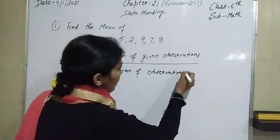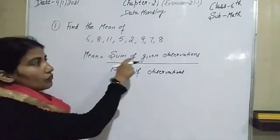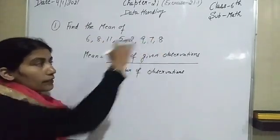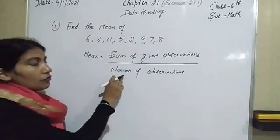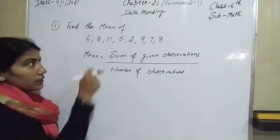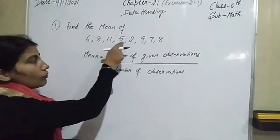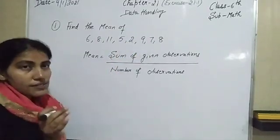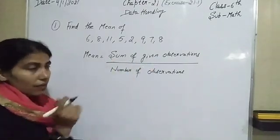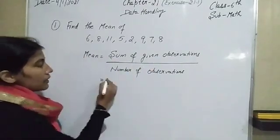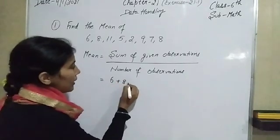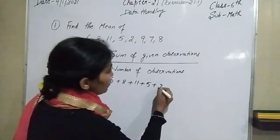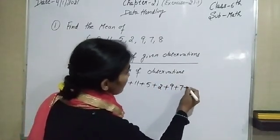So here is the formula for finding the mean. Firstly we have to calculate the sum — that means we have to add all these observations. These are called observations. Afterward we have to calculate the total number of observations: 1, 2, 3, 4, 5, 6, 7, 8 — so there are 8 observations. Now write down the sum: 6 plus 8 plus 11 plus 5 plus 2 plus 9 plus 7 plus 8.